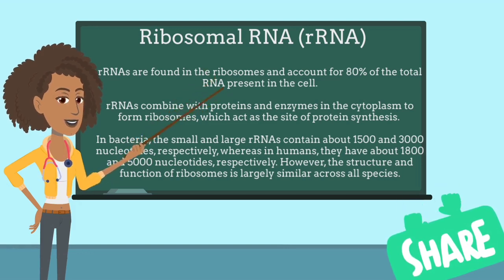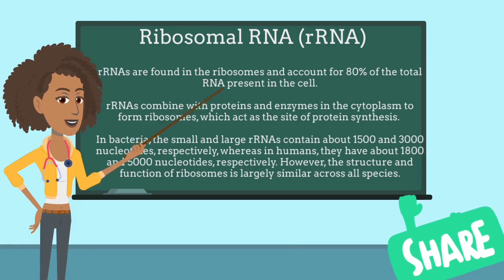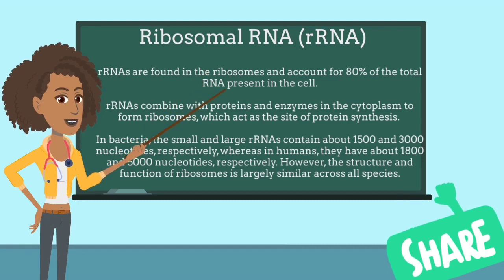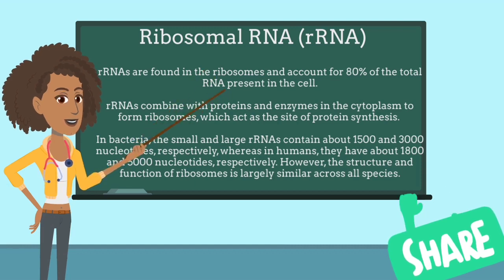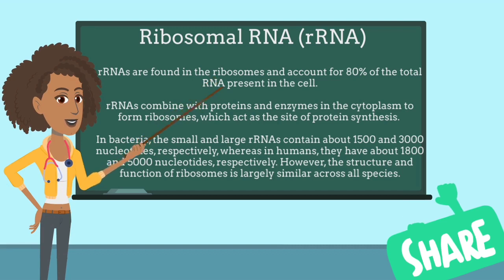Ribosomes interact with tRNAs and other molecules that are crucial to protein synthesis. In bacteria, the small and large rRNAs contain about 1,500 and 3,000 nucleotides respectively, whereas in humans, they have about 1,800 and 5,000 nucleotides respectively. However, the structure and function of ribosomes is largely similar across all species.